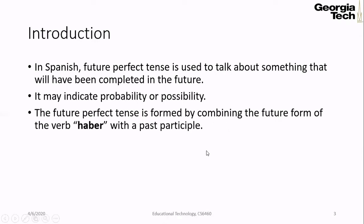Introduction. In Spanish, future perfect tense is used to talk about something that will have been completed in the future. It may even indicate probability or possibility. The future perfect tense is formed by combining the future form of verb aber with the past participle. So to make this tense, there are two things: future form of verb aber and a past participle.